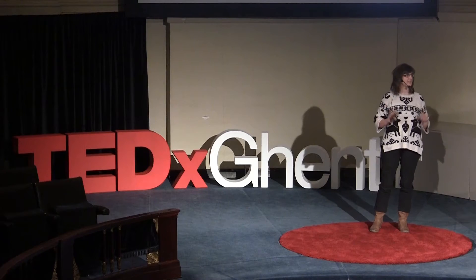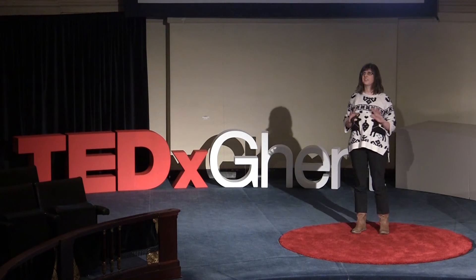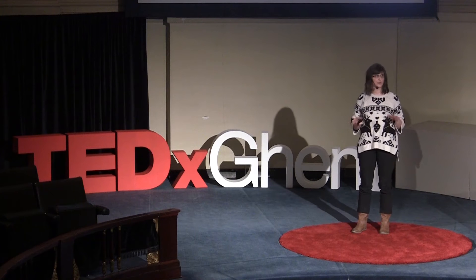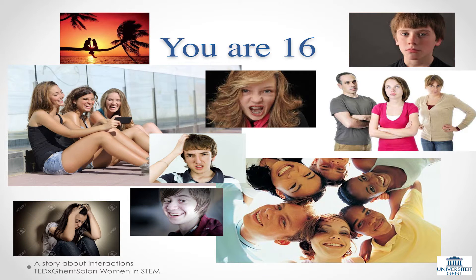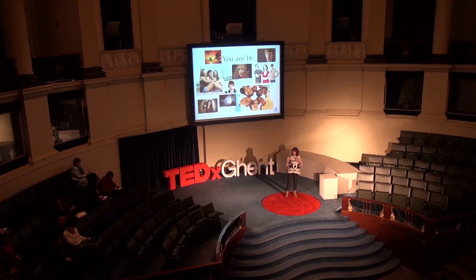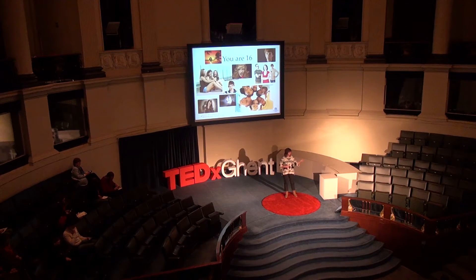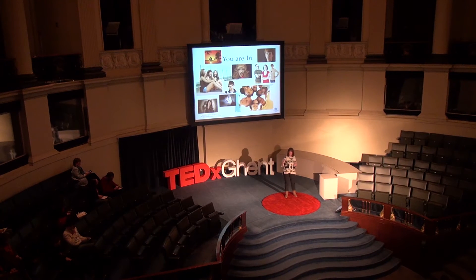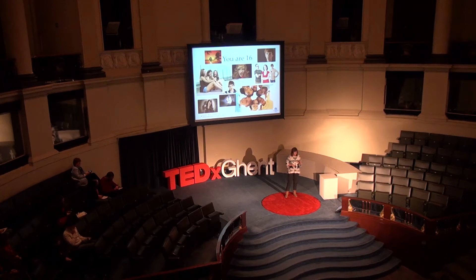I am going to tell you today a story about interactions, and you must imagine yourself at the age of 16. So you are 16 years old. This means that you are young, you are full of life, you have a lot of things to do, a lot of things to think about. You interact with your friends, you have to go to school, but you also have your hobbies — you have a very nice life. But, as I mentioned, you have to go to school.